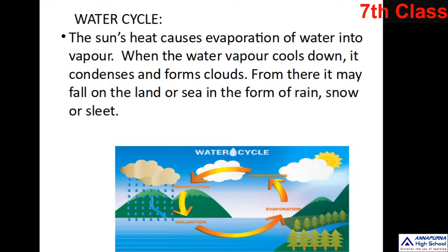What is the meaning of the water cycle? You know very well — the sun's heat causes evaporation of water into vapour. Then the water vapour cools down, it condenses and forms clouds. From these clouds, water may fall on the land or sea in the form of rain, snow or sleet. This is called the water cycle.